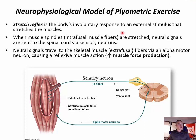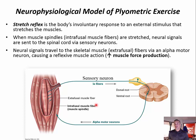Muscle spindles are also commonly referred to as intrafusal muscle fibers, as seen in the figure. These muscle spindles are proprioceptive organs that are sensitive to both the rate and the magnitude of a stretch. When a quick stretch is detected, muscular activity reflexively increases. During plyometric exercises, the muscle spindles are stimulated by a rapid stretch, causing a reflexive muscle action that potentiates or increases the activity within the agonist muscle — the prime mover — thereby increasing the force that muscle produces when it contracts.